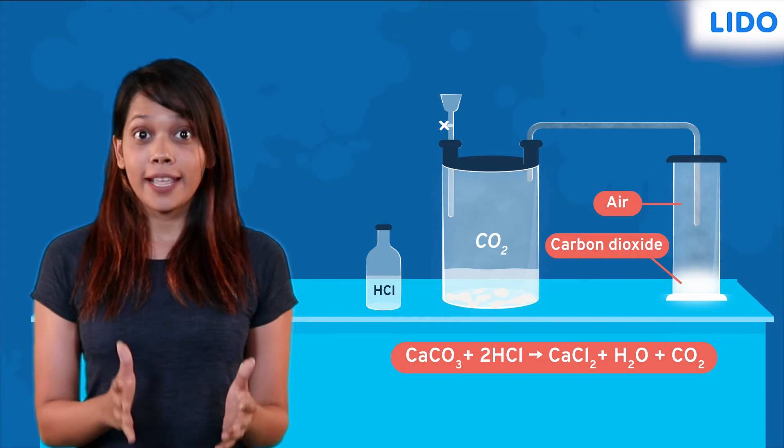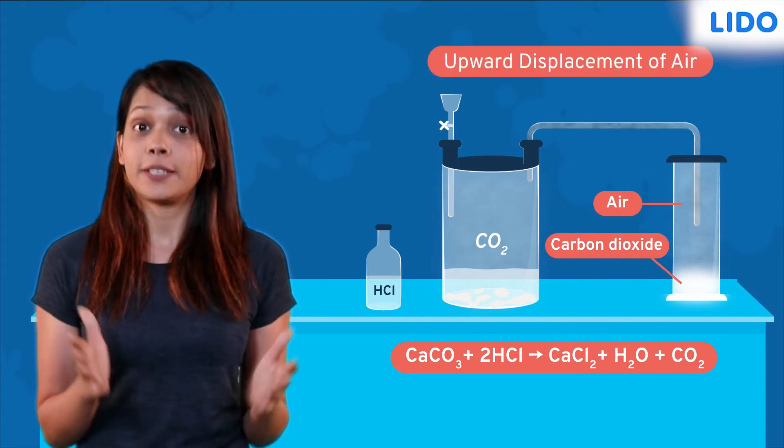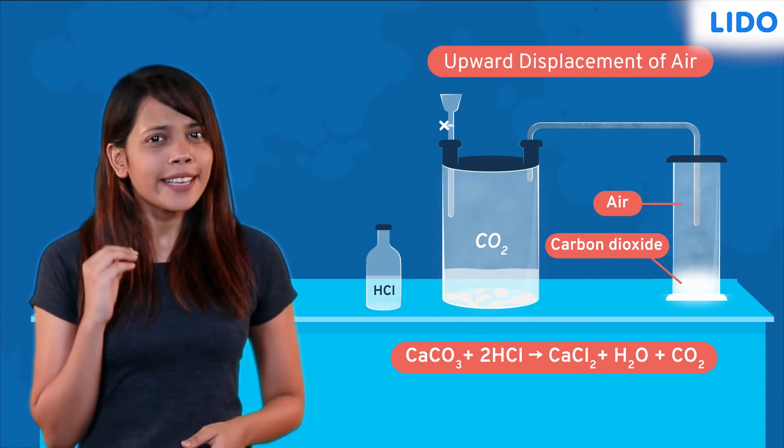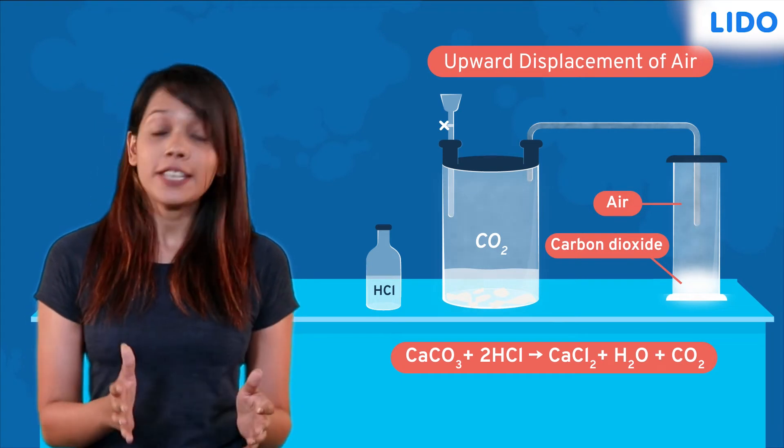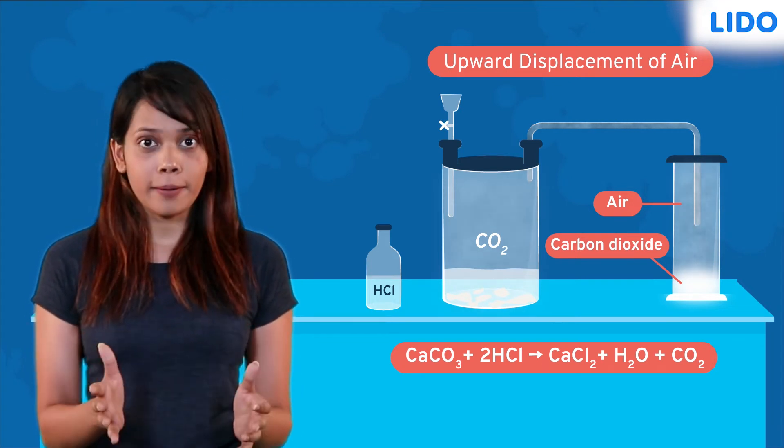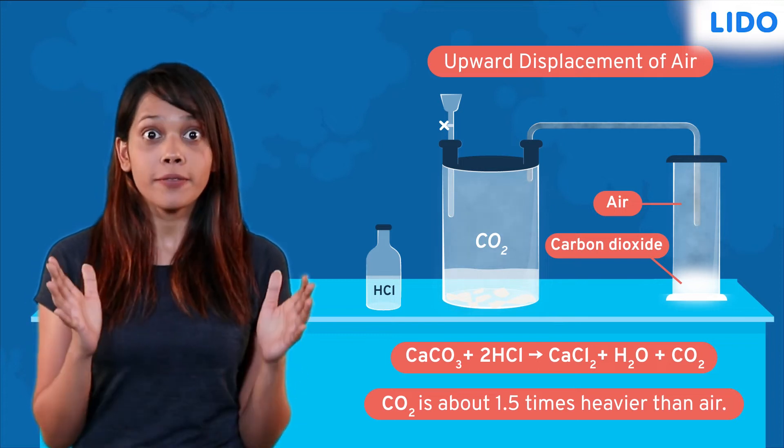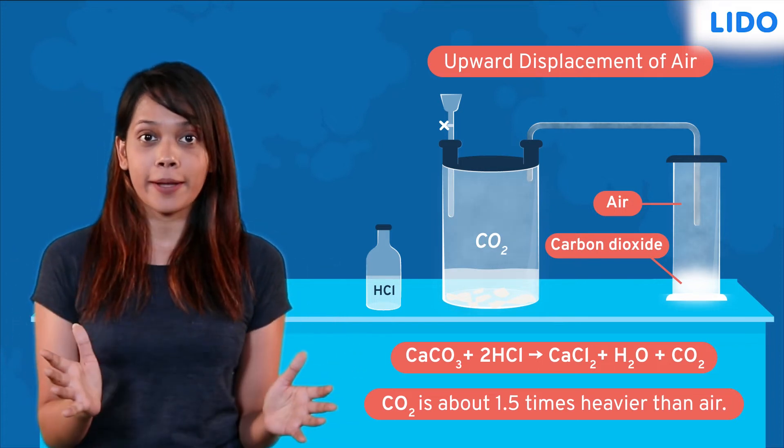This method is called the upward displacement of air. So we can clearly see that the density of carbon dioxide is more than that of air. It is about 1.5 times heavier than air.